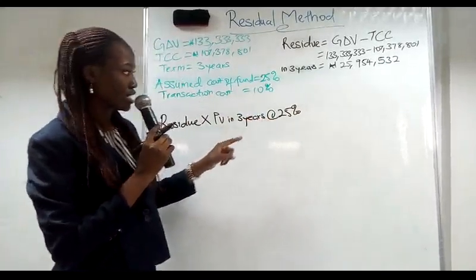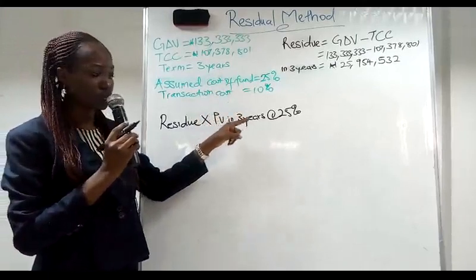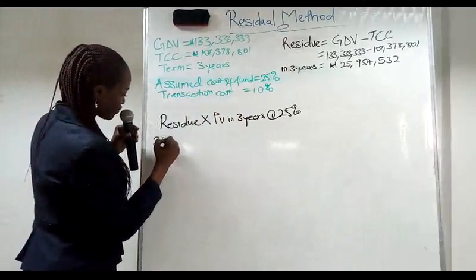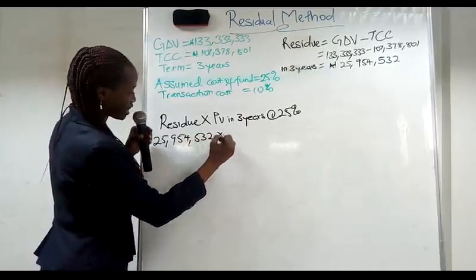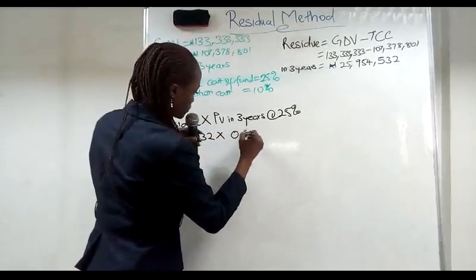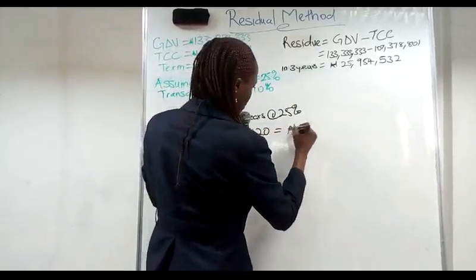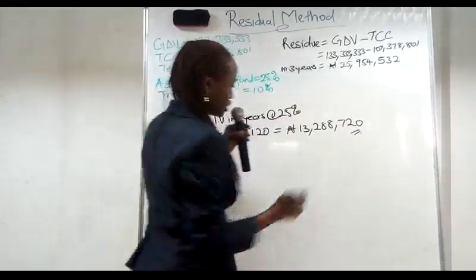Then 25% here represents the cost of fund, the cost of financial projects which is obtainable in the present economy. Our residue here is 25,954,532 times 0.512. This is our budget.